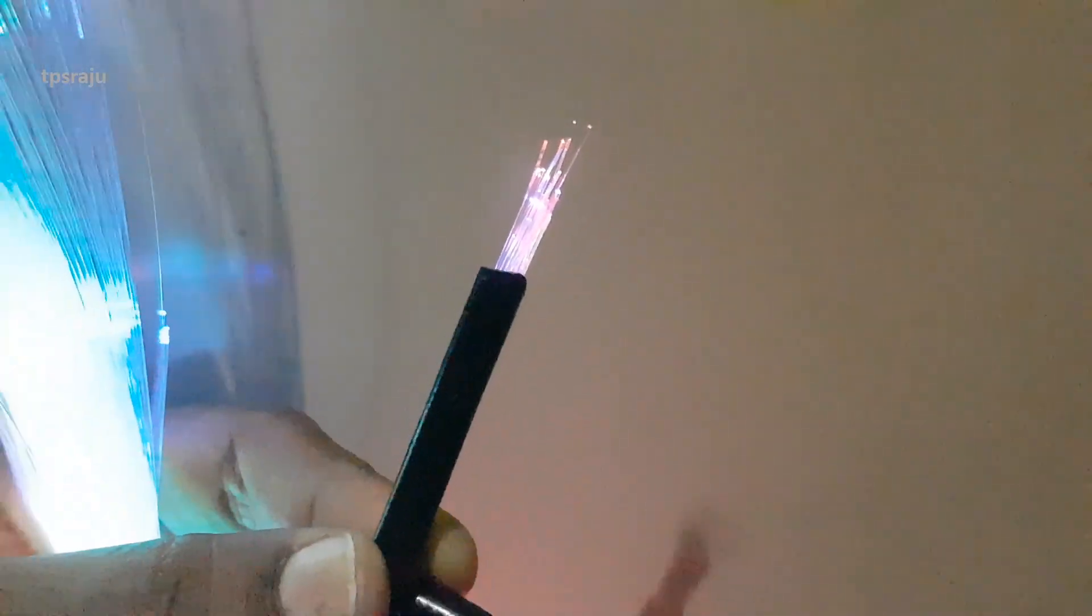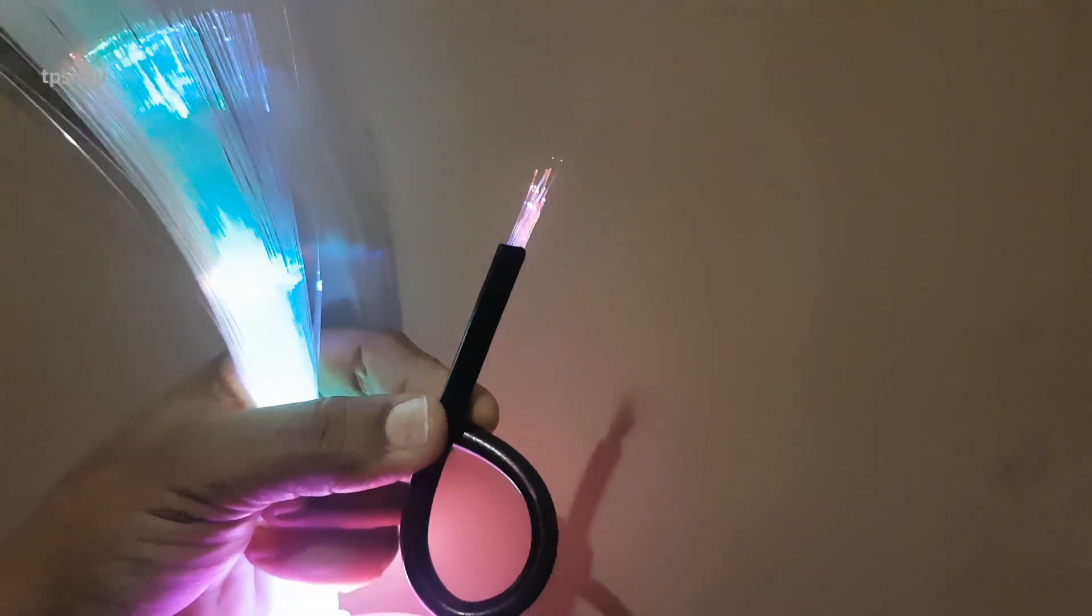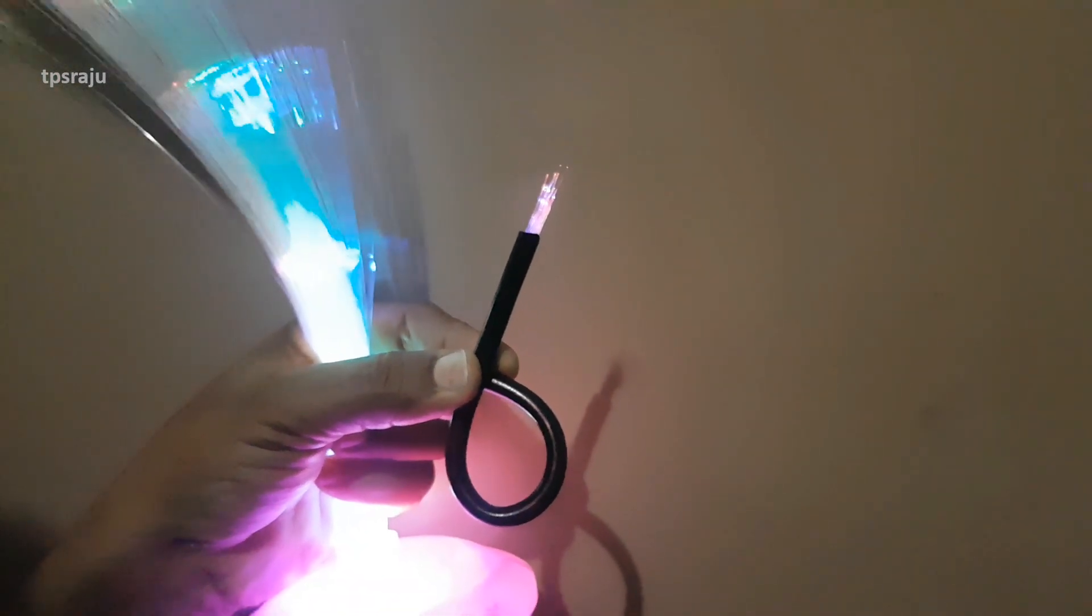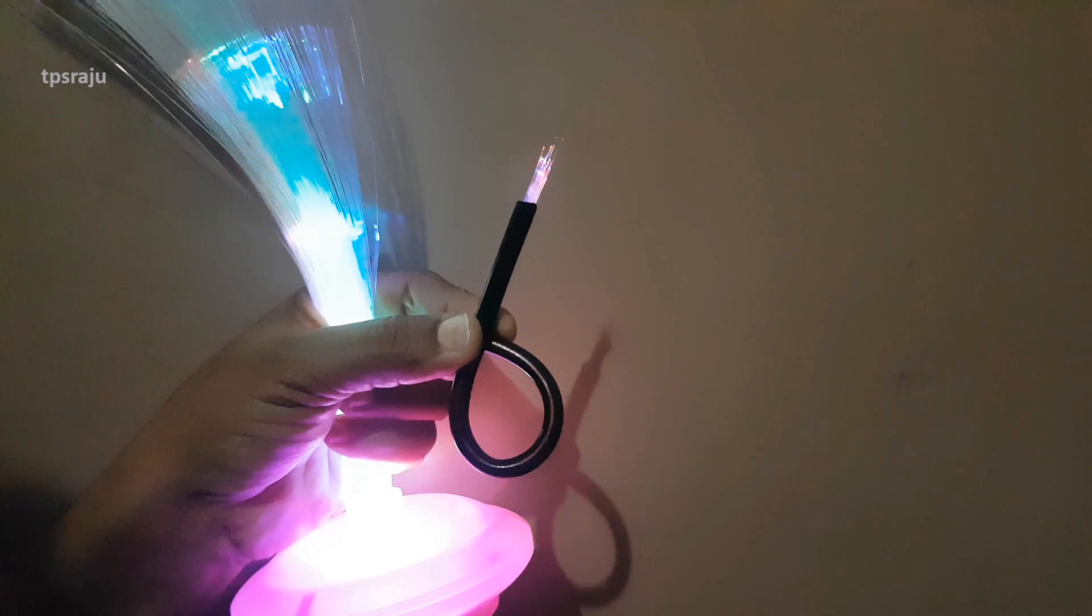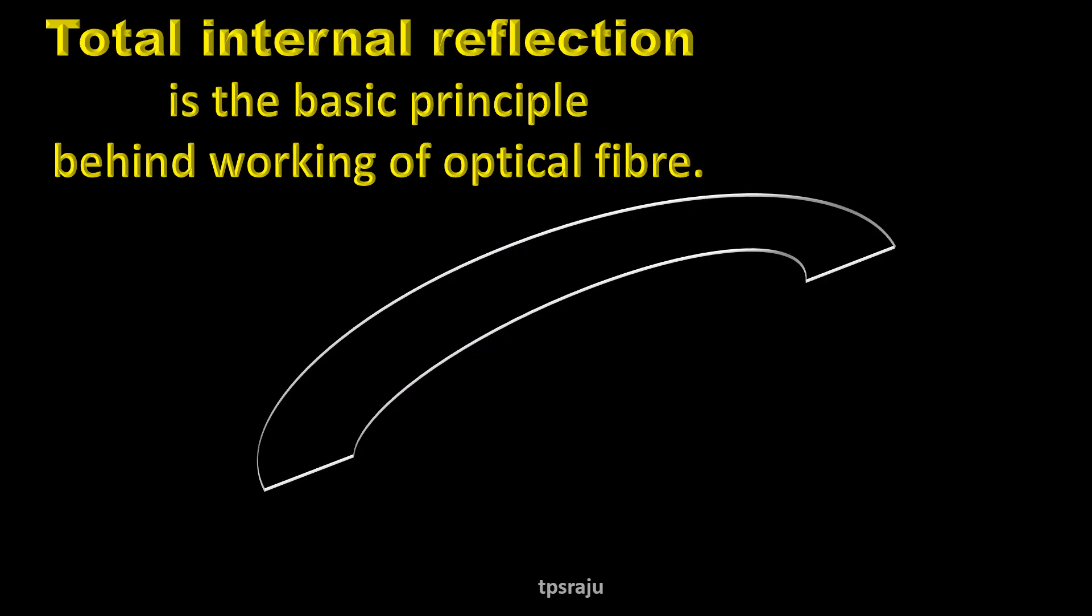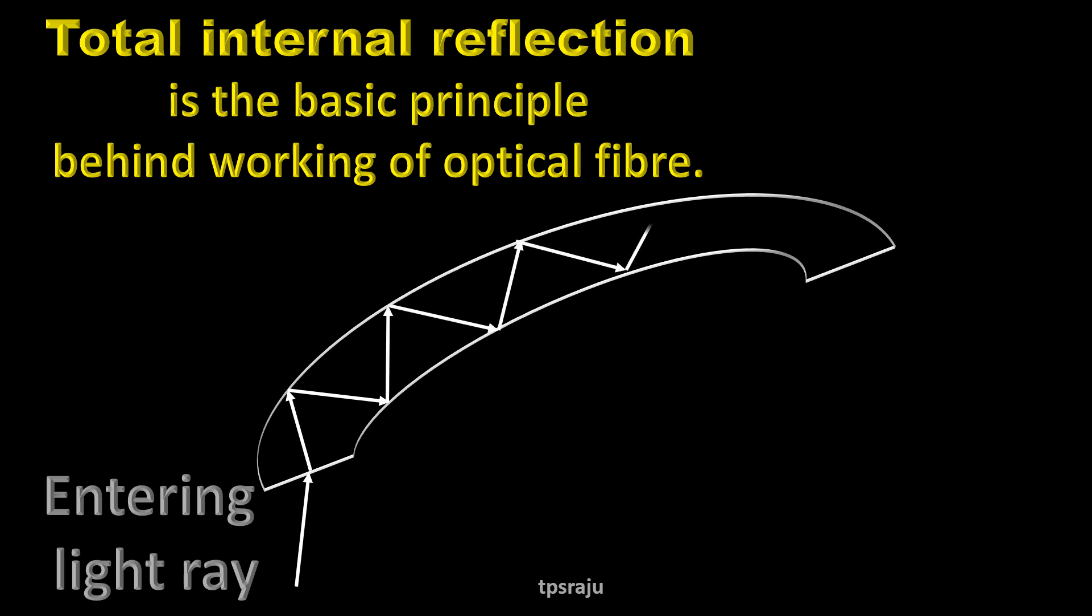Even though there is bending light is transmitted through optical fibers. How is it possible? This is due to total internal reflection. When light enters into optical fiber it makes a nearly glancing incidence on the wall. The angle of incidence is greater than the critical angle and hence total internal reflection takes place. Thus the light is transmitted along the fiber.